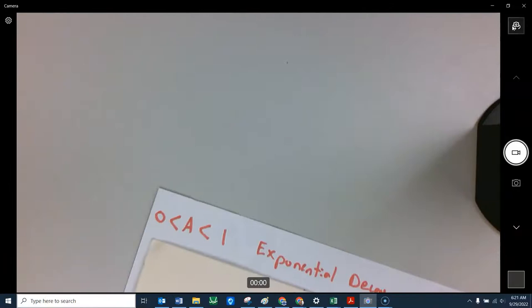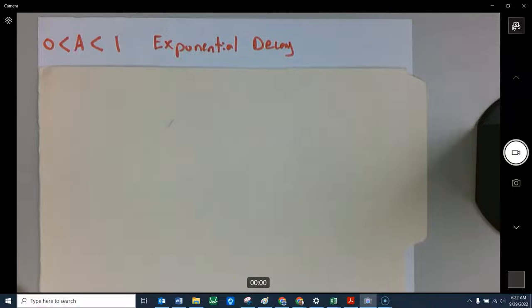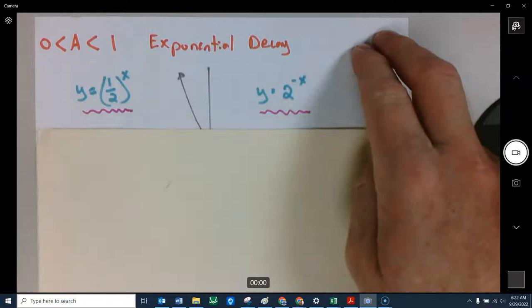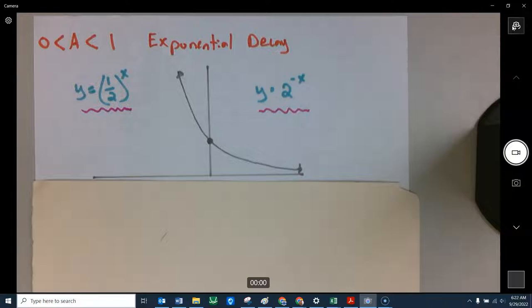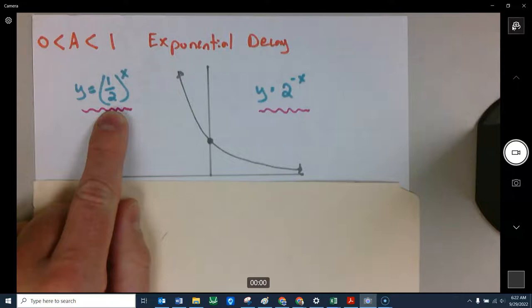Moving on. How about if A is not bigger than one? It's still positive. Any positive number is exponential. But if A is a number less than one, between zero and one, like a half, a third, 0.2, we get something called exponential decay. And exponential decay is exactly what it sounds like. In this case, it would be getting cut in half over and over and over.